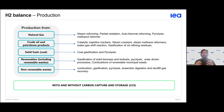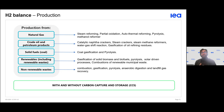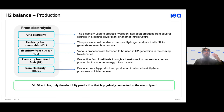On the production side, hydrogen can come from various sources: natural gas, crude oil, petroleum products, biofuels, renewable energy, non-renewable sources, and recoverable waste. A distinction is also made between production with carbon capture and storage (CCS) technology and production without CCS.